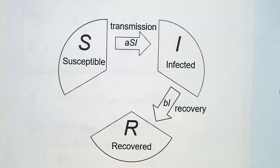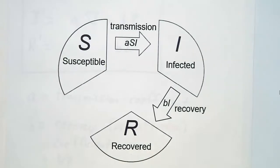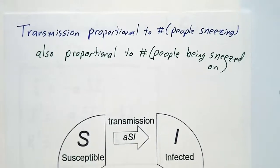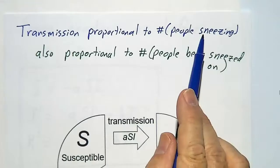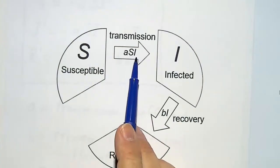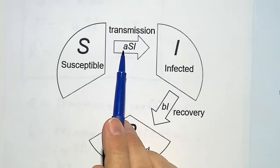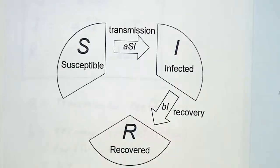Then we have transmission - susceptible people becoming infected. What causes a susceptible person to become infected? It happens when an infected person sneezes on a susceptible person. That's proportional to the number of people who are sneezing and it's also proportional to the number of people who are being sneezed on. So it's proportional to S times I. So transmission is a constant called the transmission coefficient times S times I.